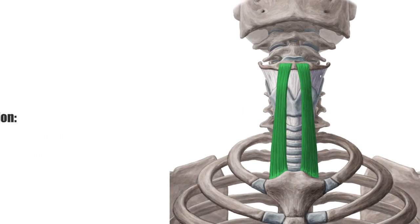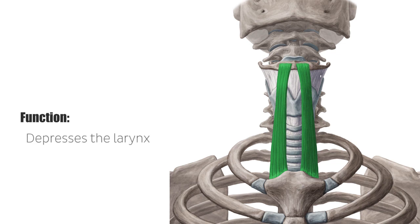The infrahyoid muscles are responsible for the positioning of the hyoid bone, along with the suprahyoid muscles. They play an active role in swallowing and the movement of the larynx. The sternohyoid muscle depresses the larynx, whereas the thyrohyoid elevates it when the hyoid bone is fixed.